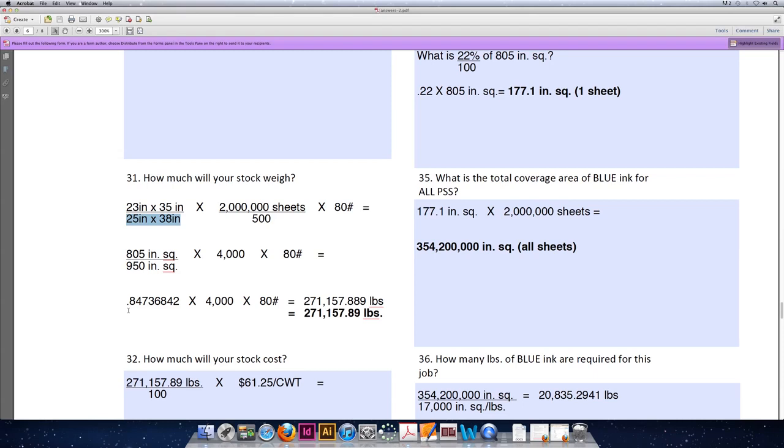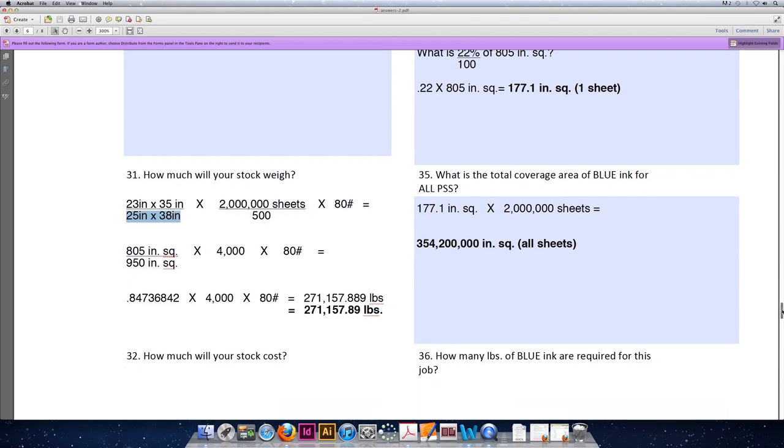0.84736842 multiplied by 4,000 multiplied by 80 equals 271,157.889 pounds. When you round that, it should come out to 271,157.89 pounds. Paper will always be rounded to two decimal places. Do not get this confused with ink. Ink we have to purchase whole pounds. Paper we have to purchase whole sheets, so if we purchase a whole sheet of paper and it doesn't weigh an entire pound, we're going to have a decimal.